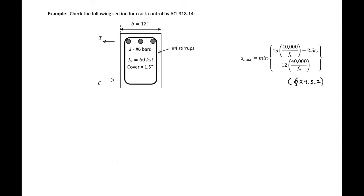In this example problem, we're going to check the following section for crack control by ACI 318-14. We can see that it's a singly reinforced section where the top bars are in tension and we have three number six bars in a 12 inch width section. The ACI requirement is that the spacing between the bars be less than an S max value using this expression here found in the code.